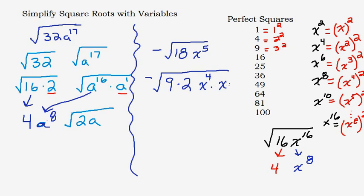Now identify the perfect squares inside: 9 and x to the fourth both get a green light. Taking their square roots: the square root of 9 is 3, and the square root of x to the fourth is x squared — remember, for exponents you divide by 2. The square root of 4 and dividing 4 by 2 give the same result here, but technically you're dividing the exponent by 2.